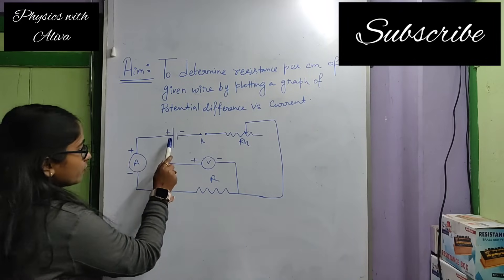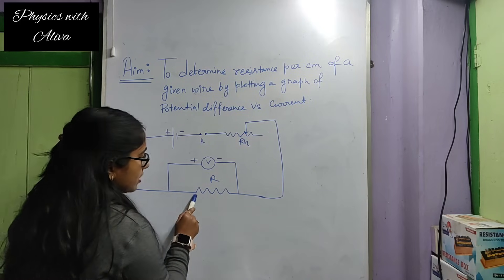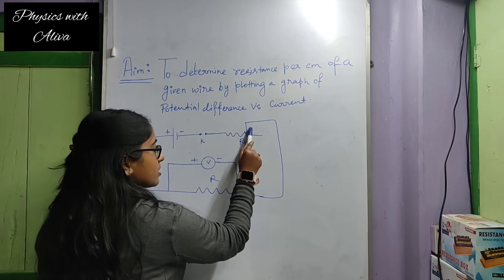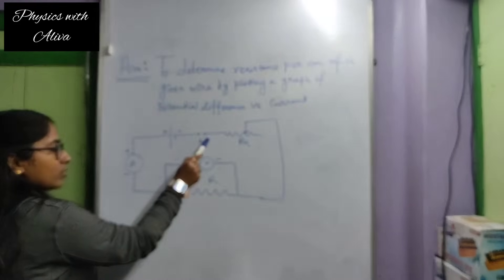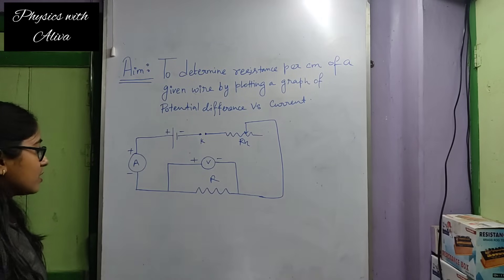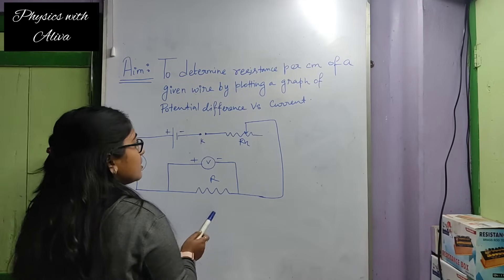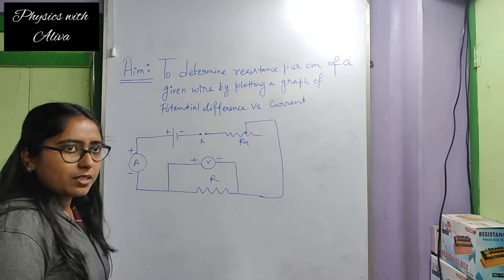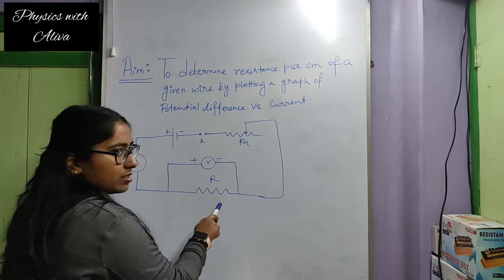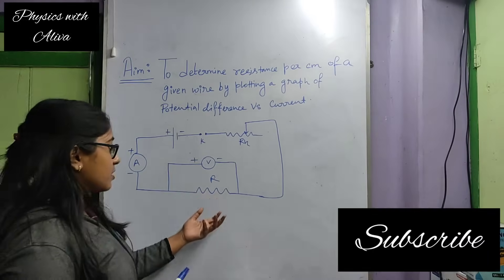The positive terminal of the battery is connected with the positive terminal of the ammeter. The negative terminal of the ammeter is connected with the resistance wire. The other terminal of the resistance wire is connected to the rheostat, and another end of the rheostat is connected to the key, and the other end of the key is connected to the negative terminal of the battery. For battery, ammeter, and voltmeter we can see positive and negative terminals, but for rheostat, resistance, and key, no positive or negative terminal is there — both terminals are the same. The voltmeter is connected parallel to the resistance. We always connect ammeter in series with the circuit and voltmeter in parallel with the resistance.